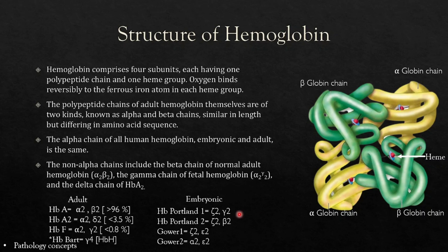Adult hemoglobins are HbA1 and HbA2. HbBBAT is adult but abnormal hemoglobin. Embryonic hemoglobins are HbPortland 1, HbPortland 2, Gower 1, and Gower 2.